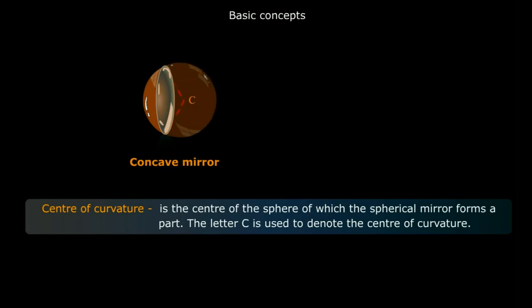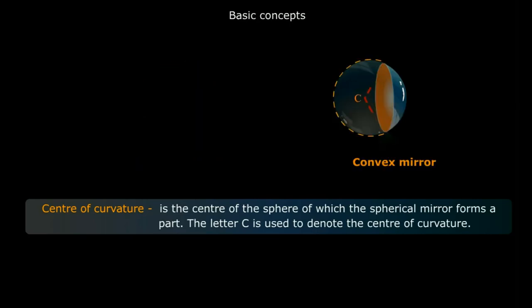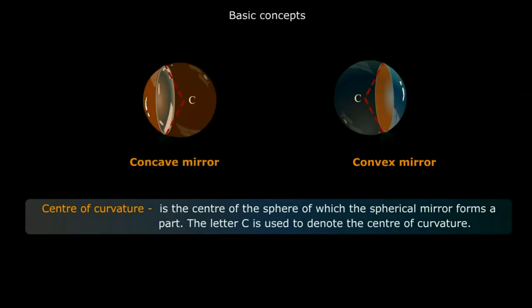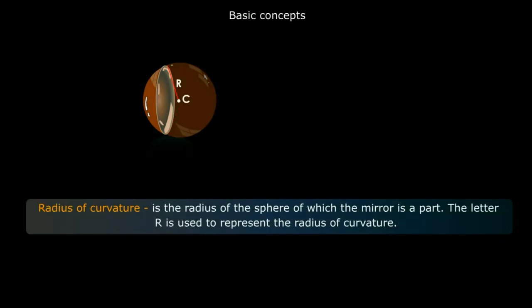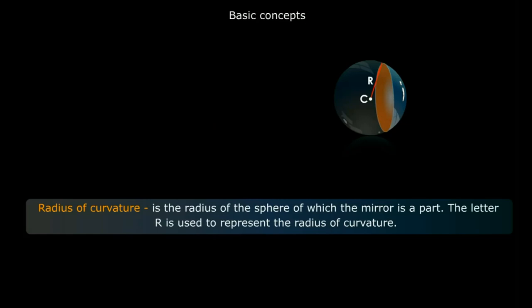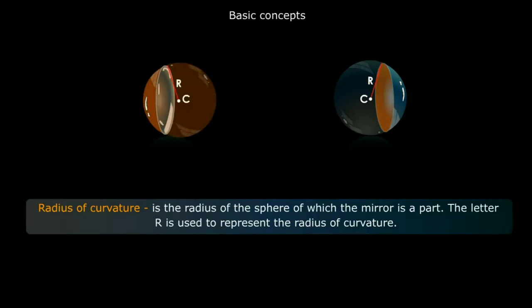Now, center of curvature. The center of curvature is the center of the sphere of which the spherical mirror forms a part. The letter C is used to denote the center of curvature. In a concave mirror, C is in front of the mirror. In a convex mirror, C is behind the mirror. The letter R is used to represent the radius of curvature.